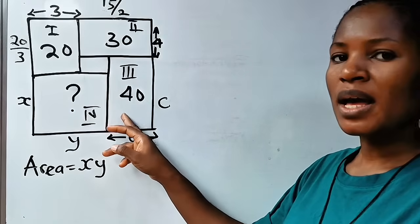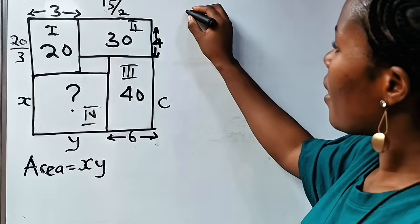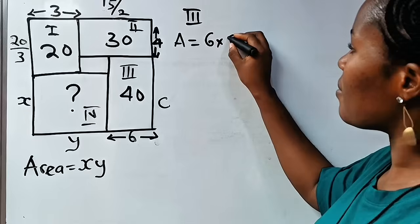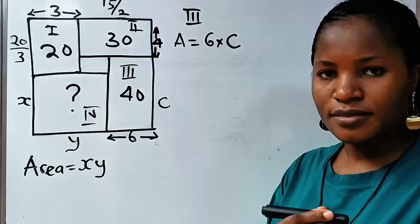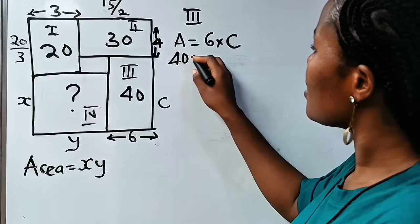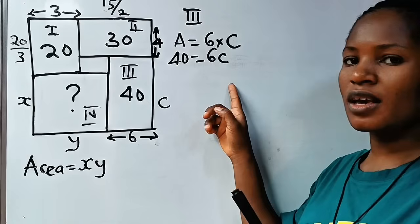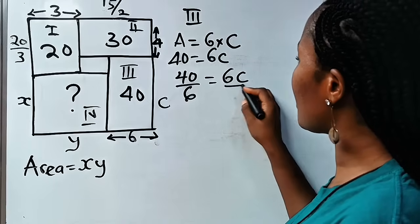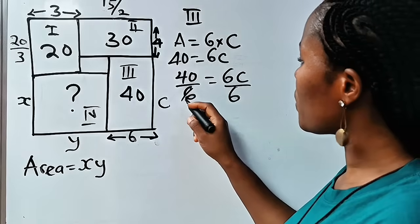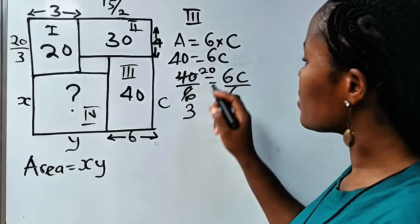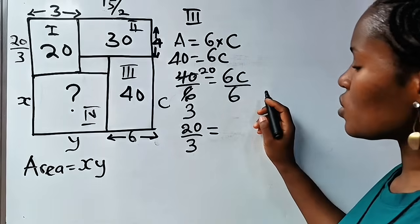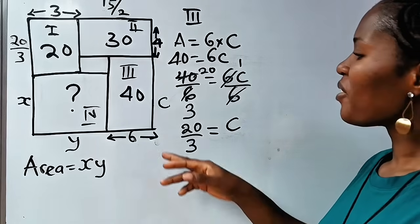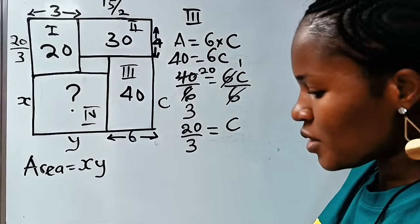Back to what we're doing — we've gotten b to be 15 over 2. Now for rectangle III, the area should be equal to 6 times c, and the area is already given as 40. So we have 40 is equal to 6c. To get the value of c, we divide both sides by 6. So 40 divided by 6 equals 6c divided by 6. Dividing by 2 gives us 20 over 3 equals c. So c equals 20 over 3.